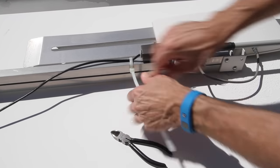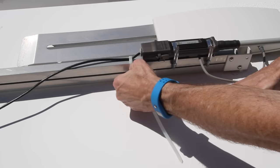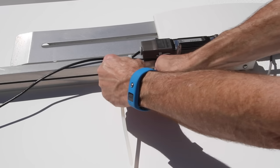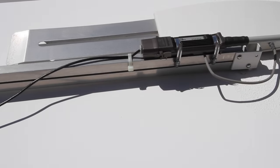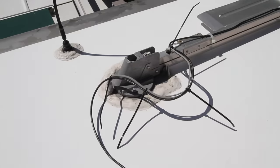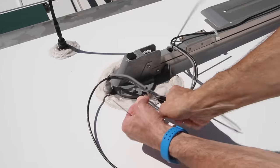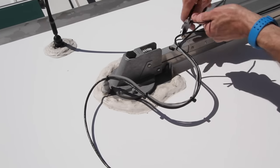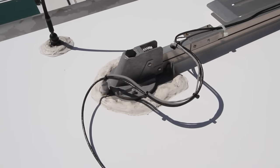We'll use one of the included zip ties to secure the cable in place right under the antenna. Then trim off the end with our wire cutter and repeat the process further down the arm. To keep things neat we've added in a few additional zip ties to attach the Wi-Fi Rangers cable to the existing TV antenna wire.